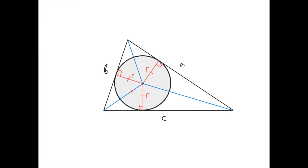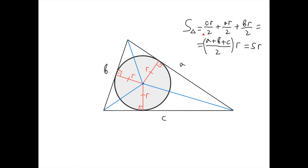Therefore, the area of this sub-triangle is C·R divided by 2, the area of this sub-triangle is A·R divided by 2, and the area of this sub-triangle is B·R divided by 2. So the area of the whole triangle is the sum of the three areas: (C·R)/2 + (A·R)/2 + (B·R)/2. This can be rewritten as (A + B + C)/2 times R. But (A + B + C)/2 is the semi-perimeter. Therefore, the area of the triangle equals the semi-perimeter times the radius of the incircle.